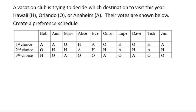A vacation club is trying to decide where to go this year — either Hawaii, Orlando, or Anaheim — and their votes are shown here.